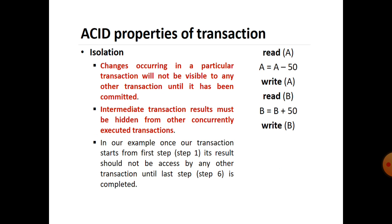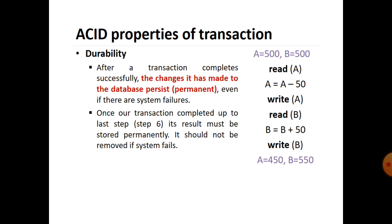Until the write B step executes, no other transaction or procedure can interfere with the current transaction. Durability: after a transaction completes successfully, the changes it has made to the database are persistent and permanent, even if there is a system failure. Once our transaction is completed up to the last step, its result must be stored permanently. Whatever result we get after the completion of the process should always remain on the hard disk in the database.